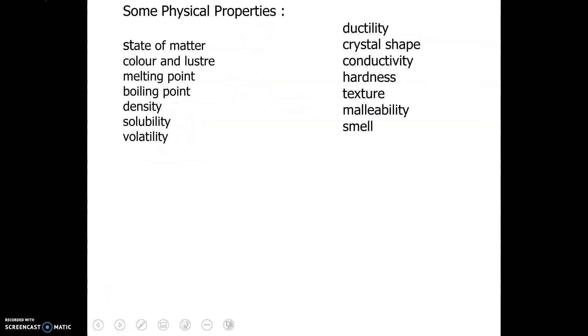So here is a list of physical properties: looking at the state of matter, solid, liquid, or gas, color and luster, melting point, boiling point, density, solubility, volatility, ductility, crystal shape, conductivity, hardness, texture, malleability, and smell.